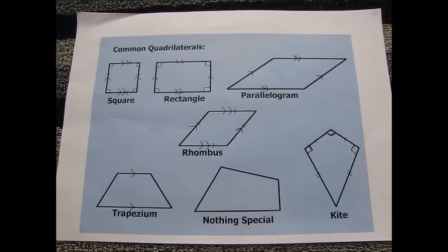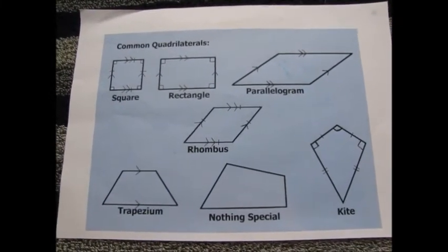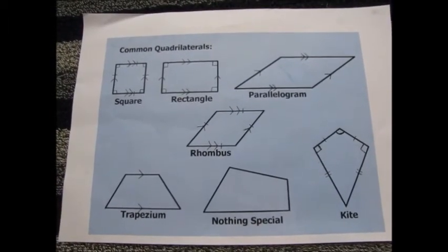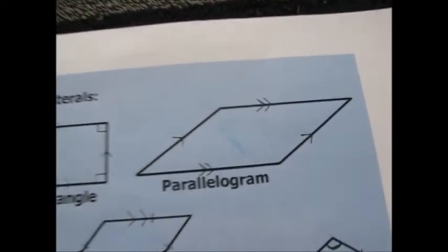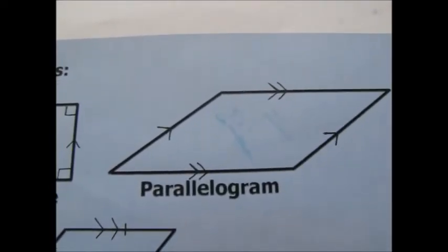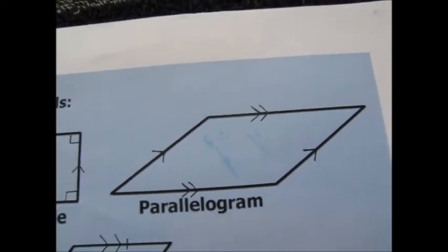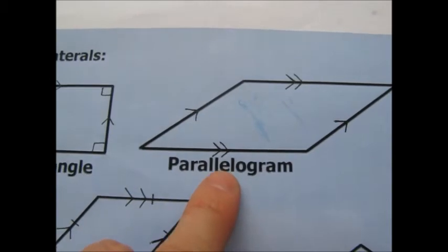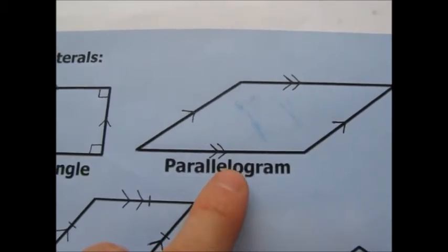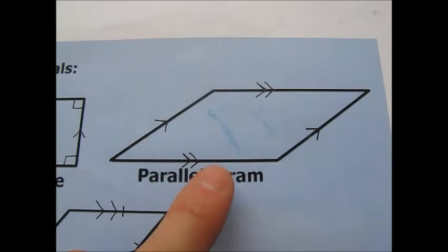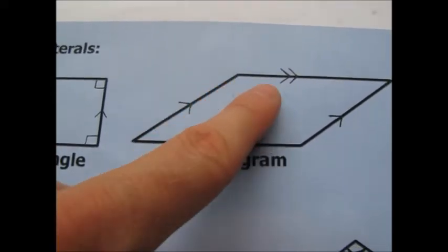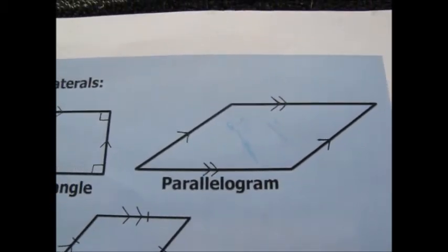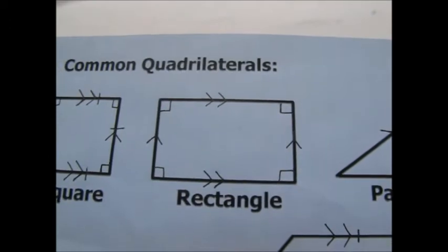Now that we know what perpendicular and parallel sides are, we can identify and name each quadrilateral. Starting with the parallelogram — the clue is in the name 'parallel.' It has two pairs of parallel sides, and that's basically all you need for it to be a parallelogram. It's a quadrilateral with four sides and two pairs of parallel sides.